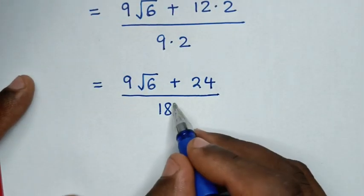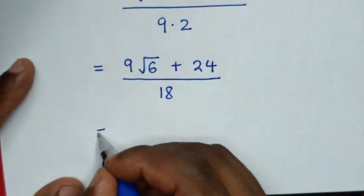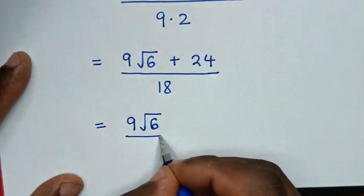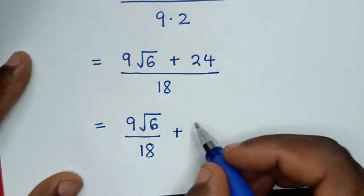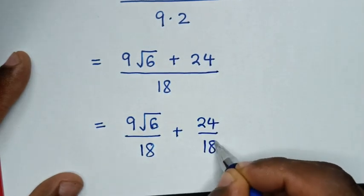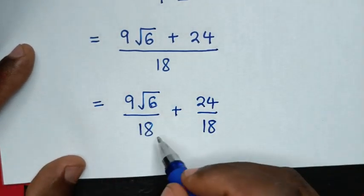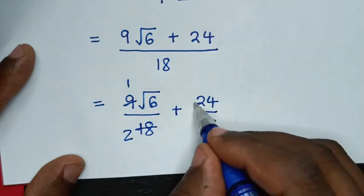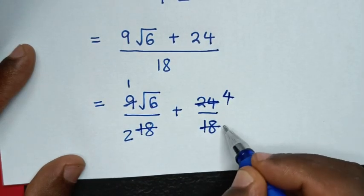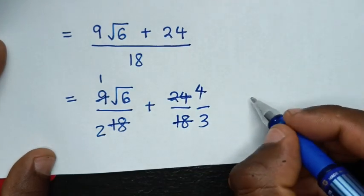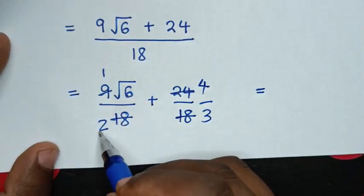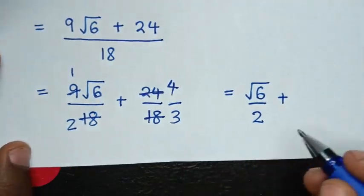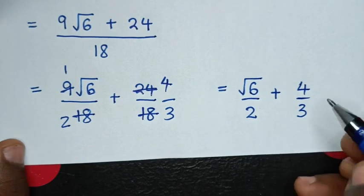Then here we will divide by 18 in this part and this part. So it will be: 9 square root of 6 over 18, plus 24 over 18. To simplify: 9 divided by 9 is 1, 18 divided by 9 is 2. And here 24 divided by 6 is 4, 18 divided by 6 is 3.